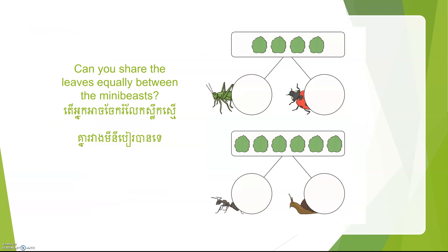Can you share the leaves equally between the mini-beasts? Let's count how many leaves there are. One, two, three, four leaves. We share equally. How many leaves does this grasshopper have? One, two — two leaves. How about the ladybird? One, two — two leaves. Each one got two leaves.